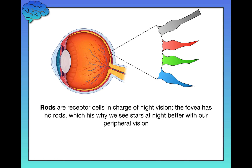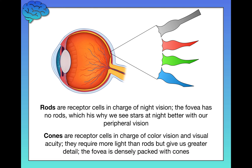Rods are receptor cells in charge of night vision. The fovea has no rods — it's densely packed with only cones. Rods only require very low levels of light to operate, but the downside is they can't process color very well and aren't great for fine detail. In contrast, cones are in charge of color vision and visual acuity — they require more light but give greater detail. When you walk into a dark room, your rods come online and your cones go offline. This is why you have that adjustment period of 10 to 20 seconds where you can't see at all — your cones don't work in low light, and it takes time for your rods to come online.